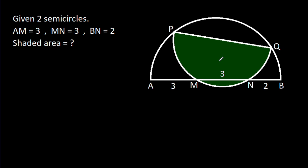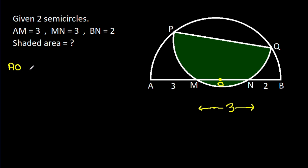In this video, we have to find the shaded area. MN is 3. Suppose the center of this semicircle is O. Then AO will be equal to BO, that will be AB over 2.